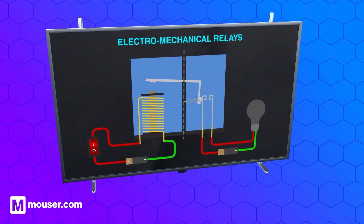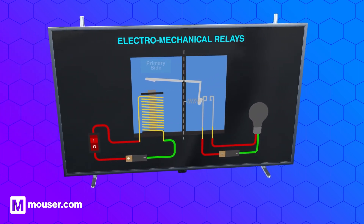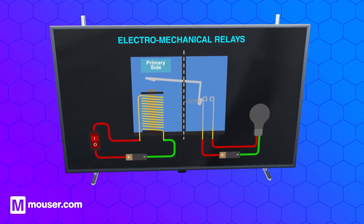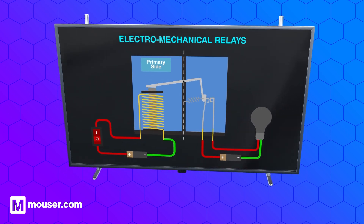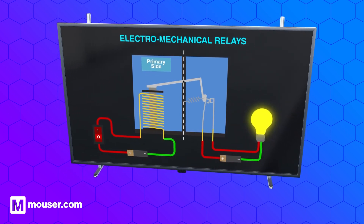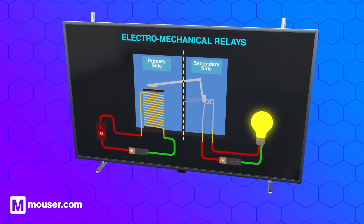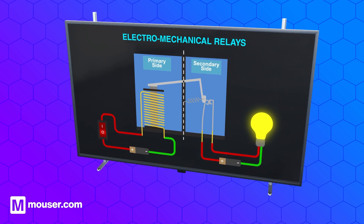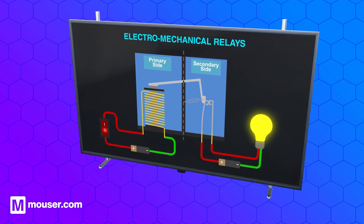In electromechanical relays, the primary circuit consists of an electromagnet that, when energized, attracts the armature, operating the secondary circuit contacts and switching the load. The two circuits remain electrically isolated from each other.